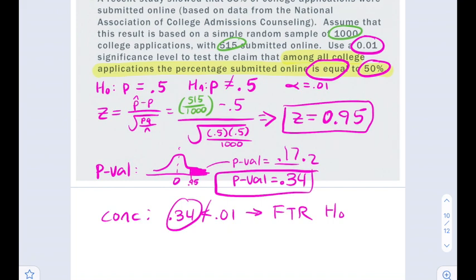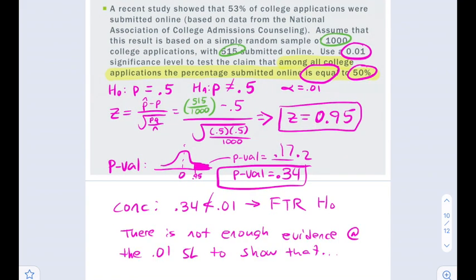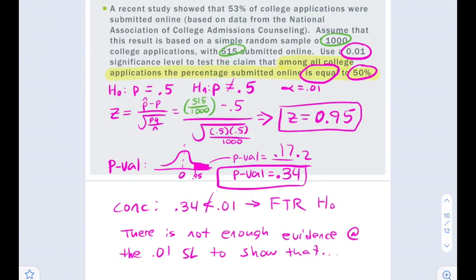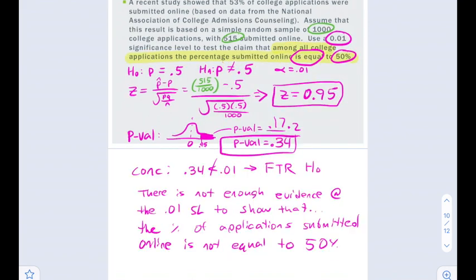I've barely read this problem but I'm ready for my technical conclusion, because this p-value of 0.34 is not less than the significance level 0.01. We fail to reject the null hypothesis. And my script says there is not enough evidence at the 0.01 significance level to show that, and then I've got to put the alternative hypothesis into words. This might require me to actually read this problem.